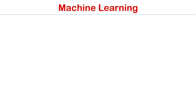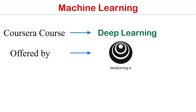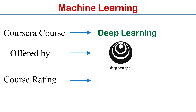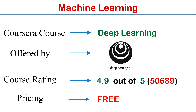The second Coursera course is Deep Learning. This is offered by DeepLearning.AI and the rating of this course is 4.9 out of 5. The price of the course is free — as I mentioned, all these courses are free. The link will be in the description box, please check it out.